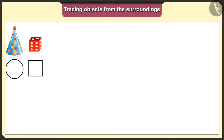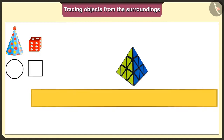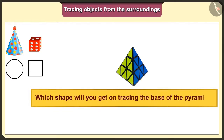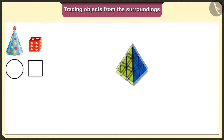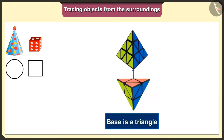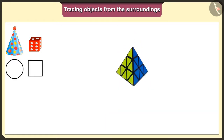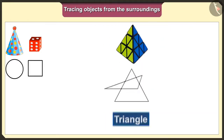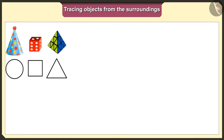Now, let's see which shape we would get when we trace this pyramid shaped toy. The base of this toy is a triangle. So, we will get a triangle shape when we trace it.